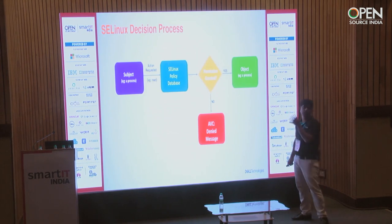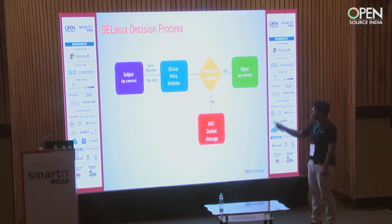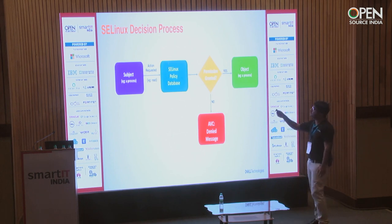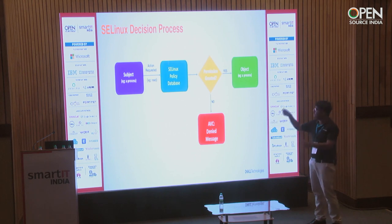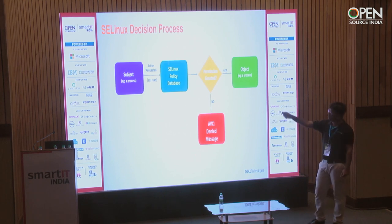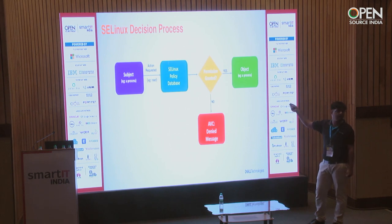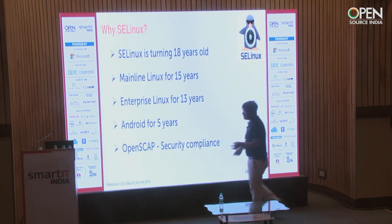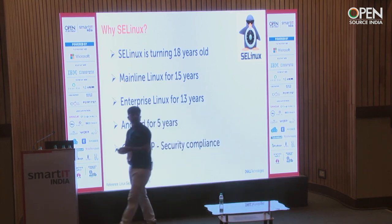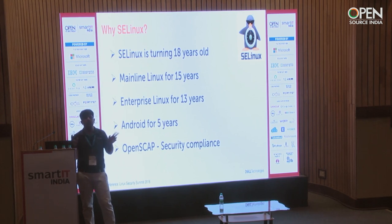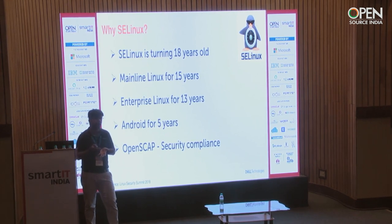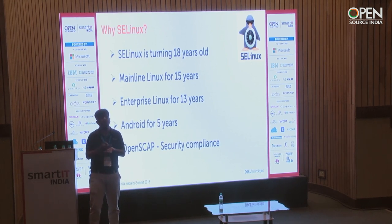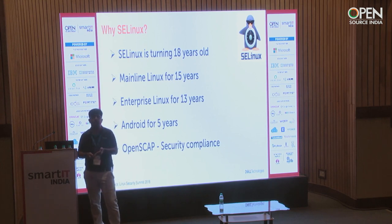In terms of the decision process: take a subject which is a process requesting a read action on a file. The kernel looks at the SELinux policy database to decide whether this subject has read access on that object. If granted, it accesses the object; if not, there will be an AVC denial. There are other implementations of MAC, like AppArmor, which is popular on Ubuntu and SUSE, but people are now trying to ship software across platforms — servers, mobile, cloud, everywhere.